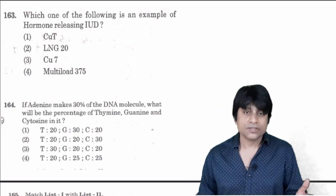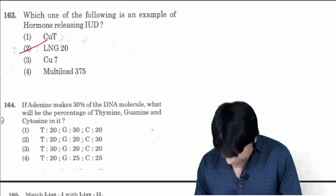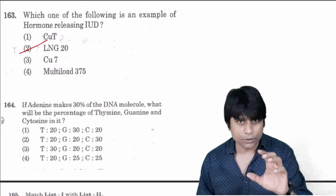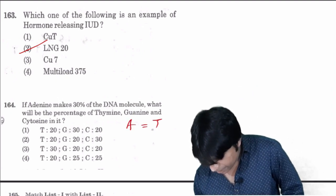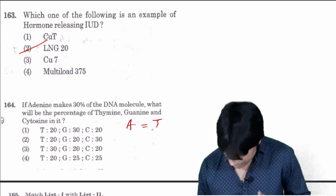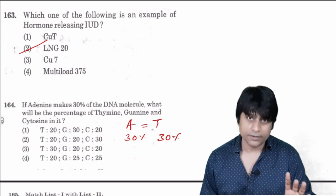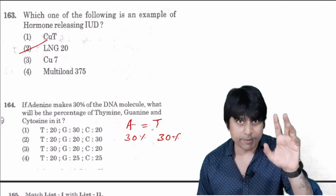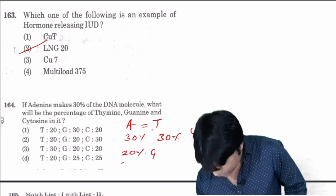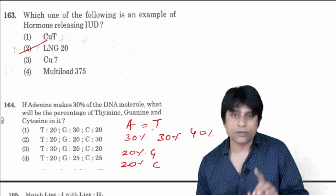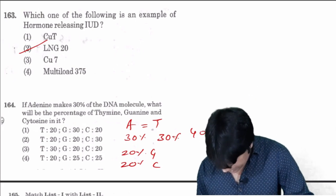Which of the following is an example of hormone releasing? LNG-20, this is synthetic progesterone. If adenine makes 30 percent of DNA, adenine pairs with thymine so number of adenines are equal to number of thymines. If adenine is 30 percent, thymine is also 30 percent. Remaining 40 percent - out of this 20 percent will be guanine and 20 percent will be cytosine.